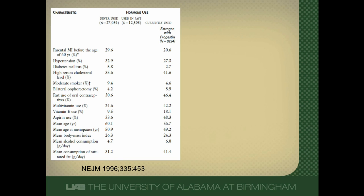Let's see an example of what this looks like in real life. On the left is the Nurses' Health Study, which tried to see if hormone replacement therapy — estrogen and progesterone — in postmenopausal women was better than never using hormones in preventing cardiovascular disease. The blue arrows show traditional cardiovascular risk factors: family history of cardiovascular disease, hypertension, diabetes, and smoking. On average, the women using hormone replacement therapy were healthier — there was less smoking, less diabetes, less hypertension, and less family history of cardiovascular disease.